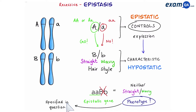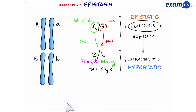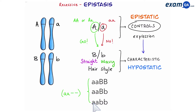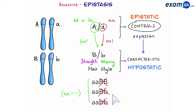Let's quickly summarize. Any genotype with two small a's — we can write these in dash form because after two small a's it doesn't matter whether it's big B or small B — in all three of these genotypes the characteristic gene for hairstyle will not be expressed. So all three of these individuals will have neither straight nor wavy hair.